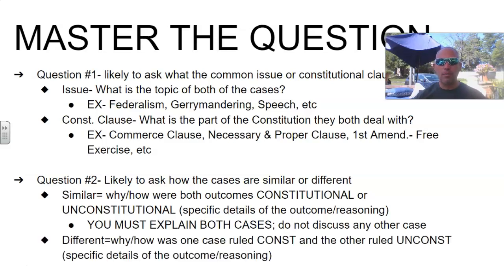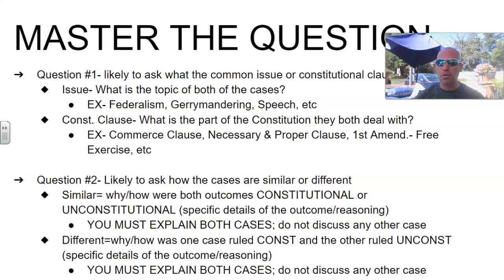If the outcomes are different, one case was ruled constitutional and the other unconstitutional, and you would have to explain how the Supreme Court came to both of those different decisions — talking about both cases. If you're not sure about the required case, you at least know that the case AP provides will tell you whether the Supreme Court ruled it constitutional or unconstitutional, and you can use that as a guide to help spark your memory. For this question, you must explain both cases and not discuss any other case — limit it to just the two discussed in the question.